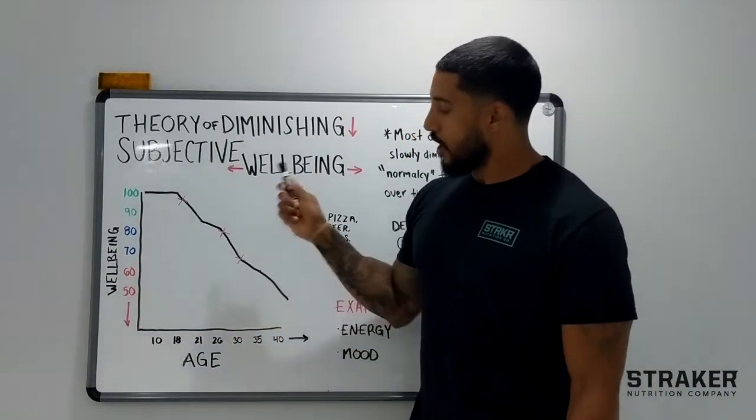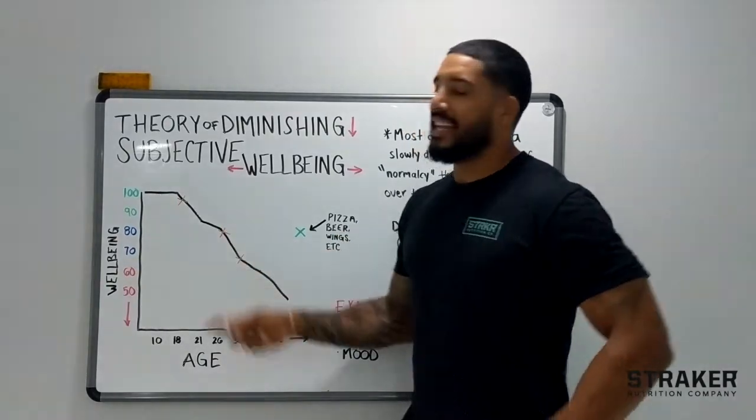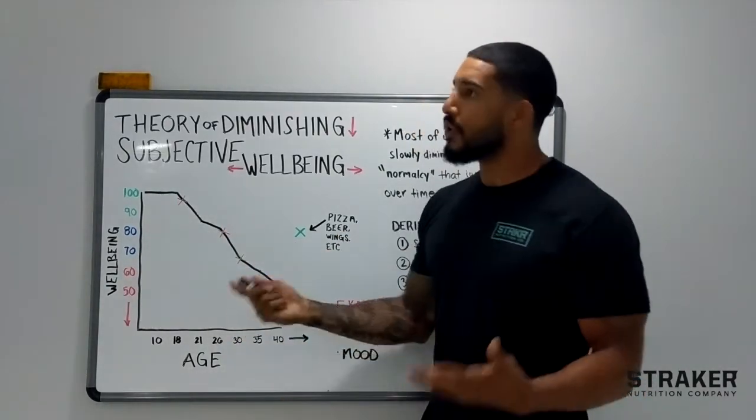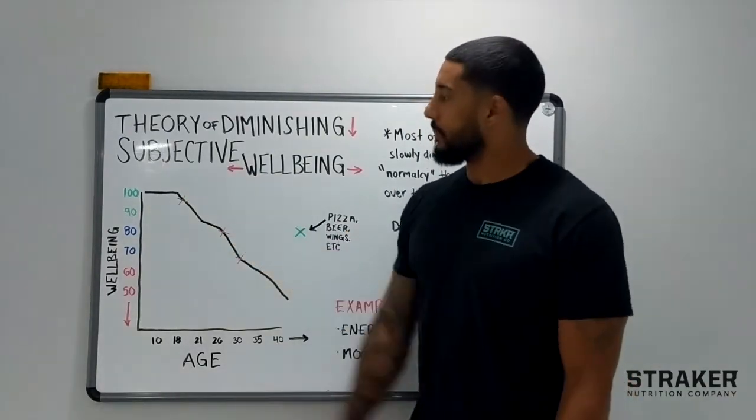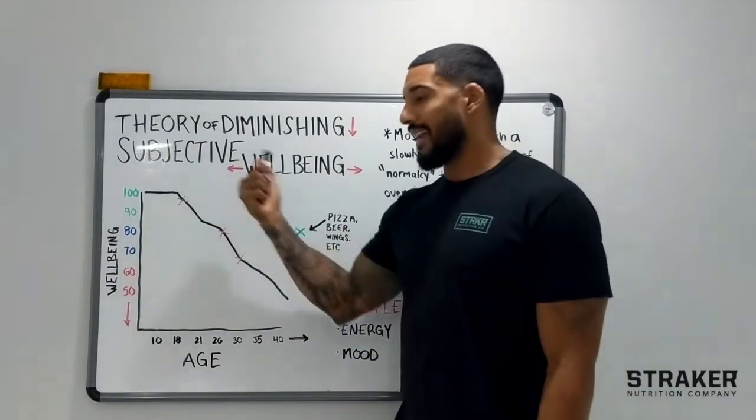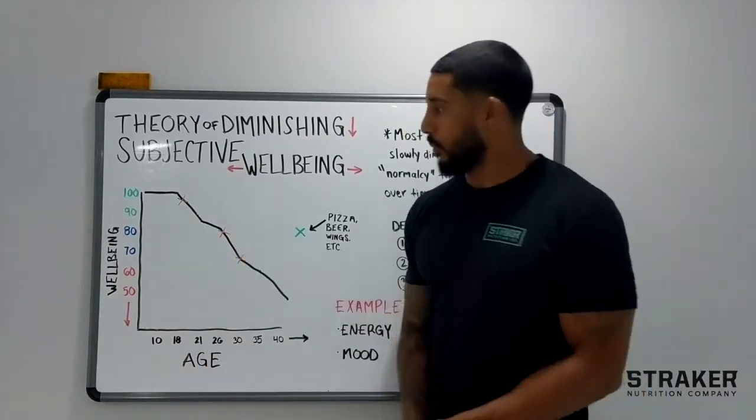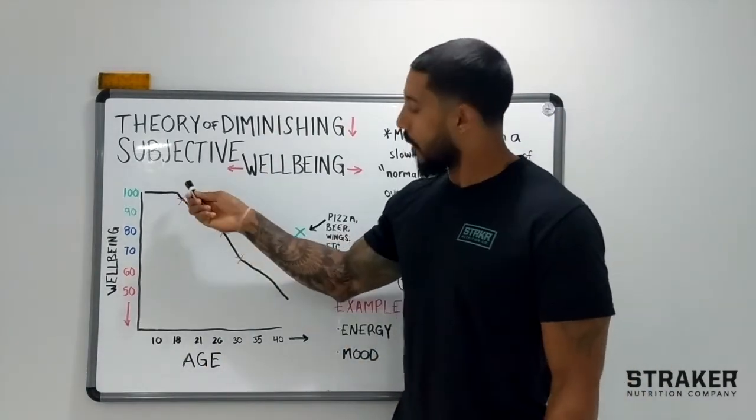And what we see here is when you're younger, you're not in control of your actions for the most part as your parents are controlling things. So you're getting most square meals a day, you have bedtimes, and your activity levels are higher because maybe you play a couple sports. So you operate really high for a while.